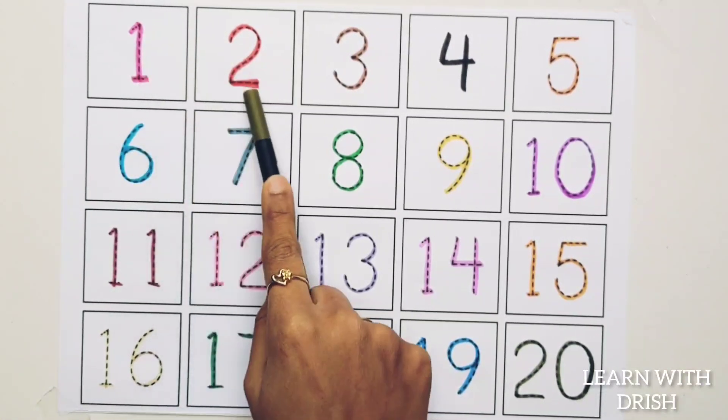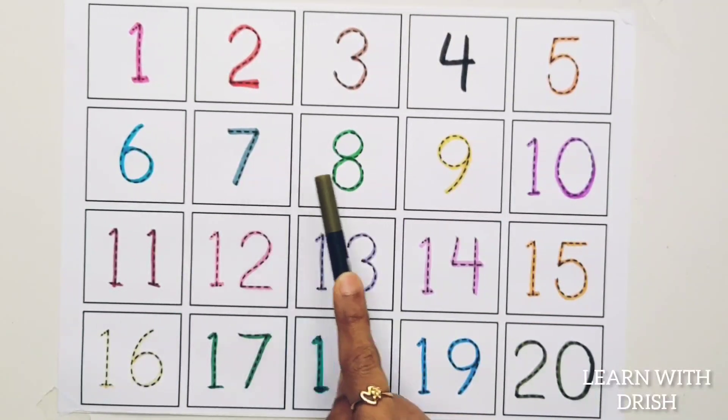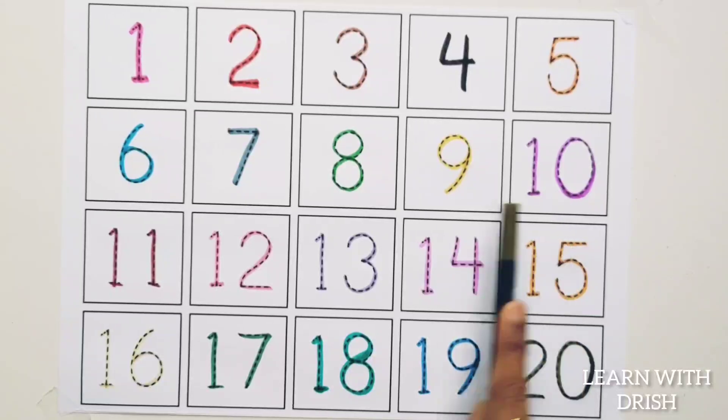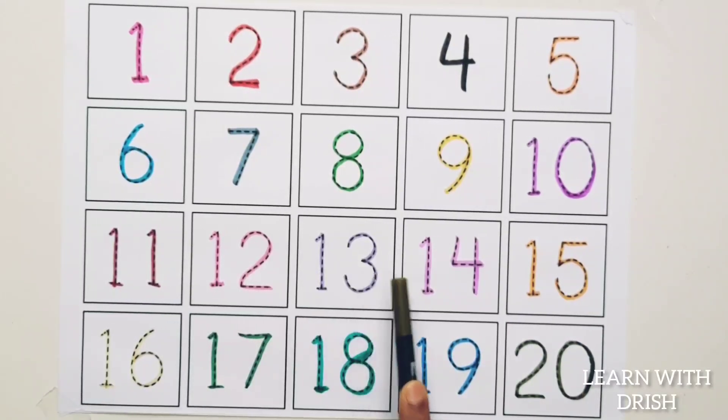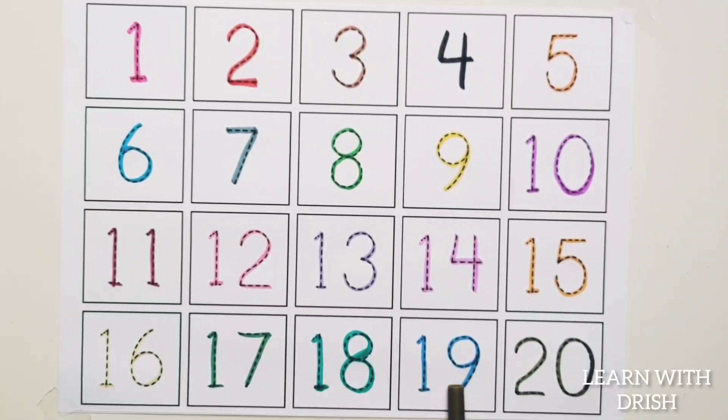1, 2, 3, 4, 5, 6, 7, 8, 9, 10, 11, 12, 13, 14, 15, 16, 17, 18, 19, 20.